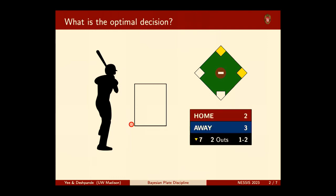Now let's add some additional complexity. Let's say the score is two to three, the home team is batting — so they're down by one run — it's the bottom of the seventh inning, there are two outs, and the batter is behind in the count at one and two. Does our decision change now? Well, it's a lot more complicated. The batter's behind in the count, and his team's in a pretty good position to potentially take the lead. So maybe he should take a chance and swing to hit the runners in. It's a lot more unclear now what the optimal decision should be.